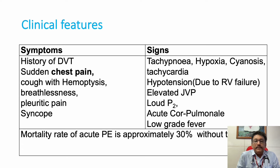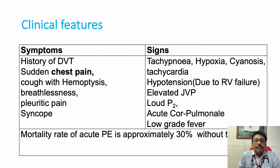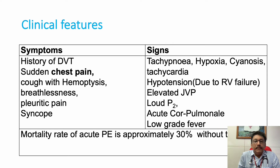Signs include tachypnea and tachycardia, the most common presentations. Hypoxia, cyanosis, and hypotension due to RV failure can occur in massive pulmonary embolism. Elevated JVP, loud P2 due to acute pulmonary hypertension, and low-grade fever may also be present. Many patients have only mild symptoms; all these findings are typically seen only in massive pulmonary embolism.